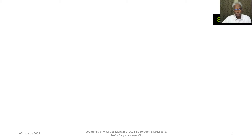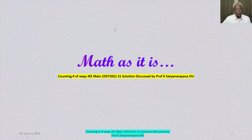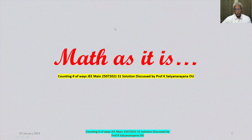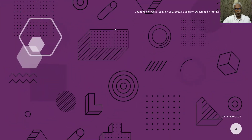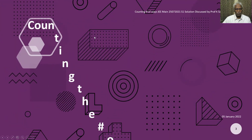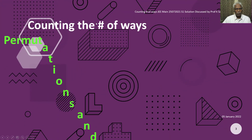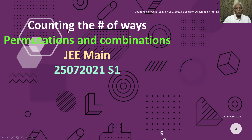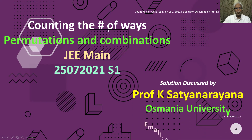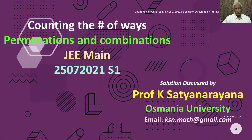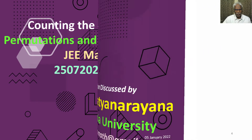We will now discuss the solution of a problem from the section permutations and combinations. The problem is on counting the number of ways of selections subject to the given constraints.